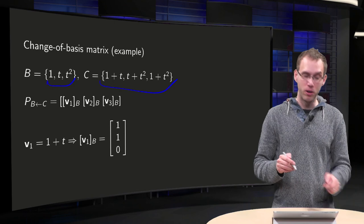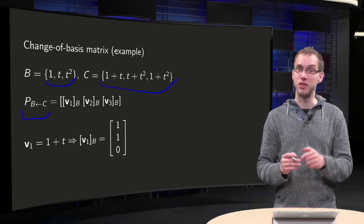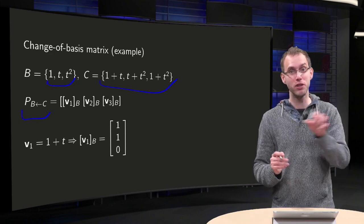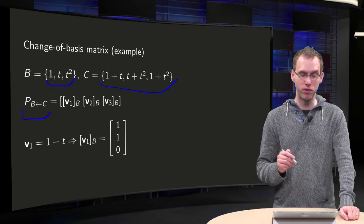So, we are going to determine P from C to B first, because it is easier to express V1 in terms of B than to express U1 in terms of C. We can try the other one also, but this one works faster. We will do this one first.